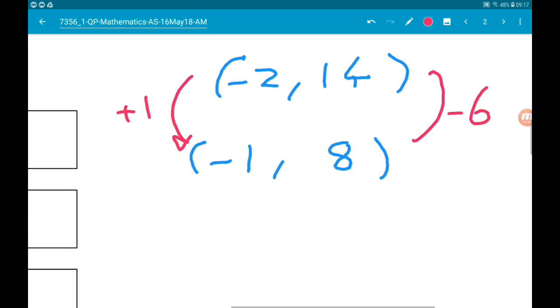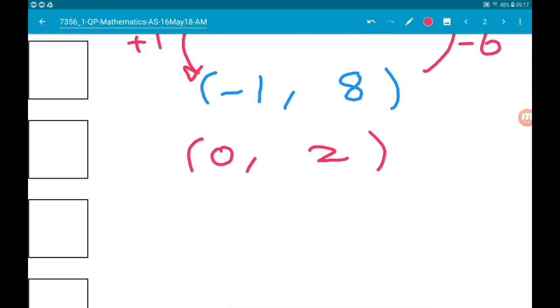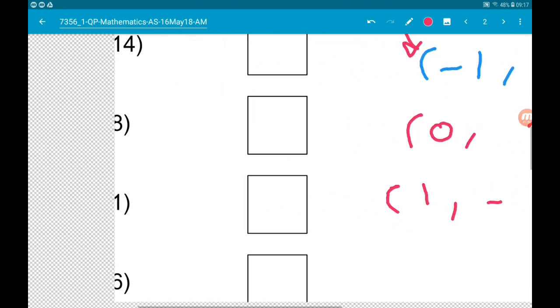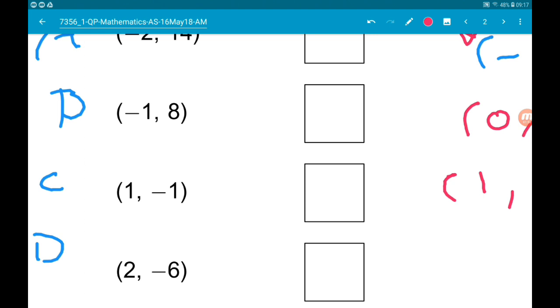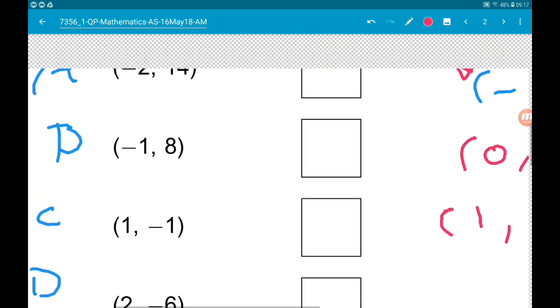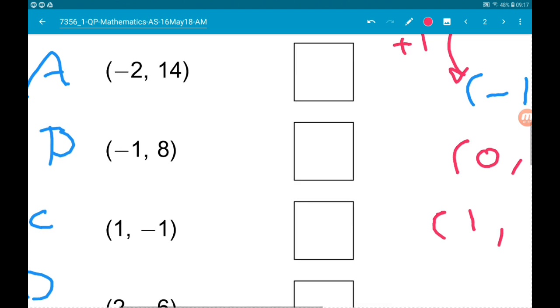On the line that connects these two points, the next point along would be 0, 2. The next one along would be 1, minus 4. So point C doesn't lie on the straight line joining A and B together.